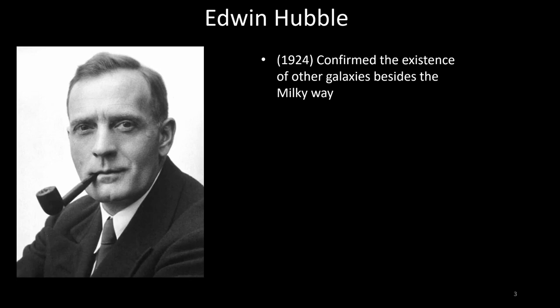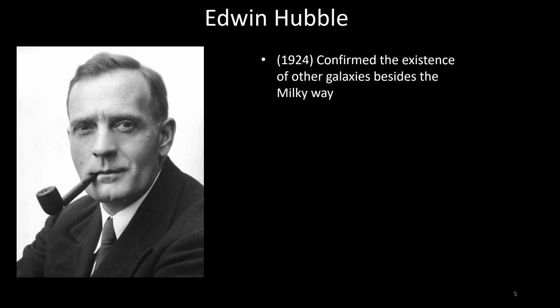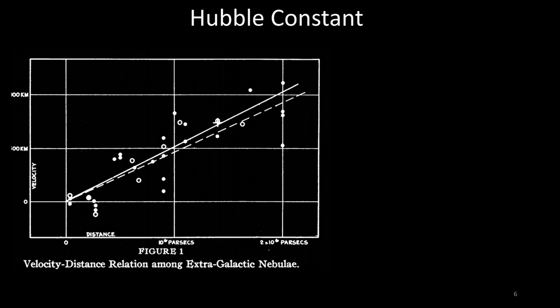Following this work, in his 1929 paper titled 'A Relation Between Distance and Radial Velocity Among Extragalactic Nebulae,' Hubble used Vesto Slipher's discovery of the Doppler shift in the spectra of galaxies to prove that the universe was expanding. The Doppler redshift Z can be described as the fractional difference between the observed frequency and measured laboratory frequency of light. This implies the expansion of space in all directions would stretch the wavelengths of light propagating through space, leading to farther objects appearing more red — and this was exactly what Hubble found.